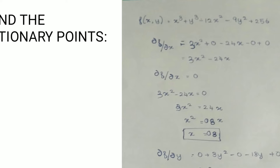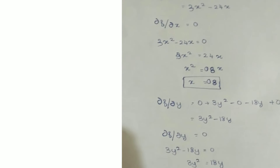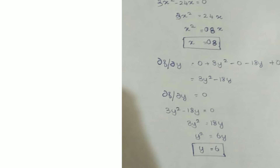Put ∂f/∂x = 0, so 3x² - 24x = 0. Moving terms: 3x² = 24x. Then x² = 24/3 = 8. Cancelling one x gives x = 8. We have found one stationary value. Stationary points are also known as critical numbers.